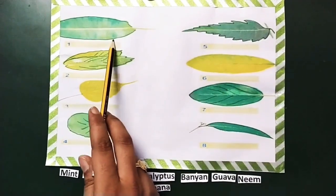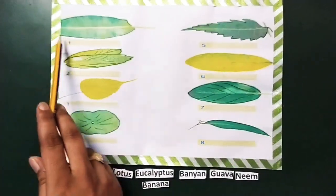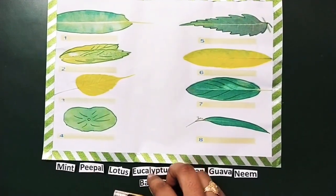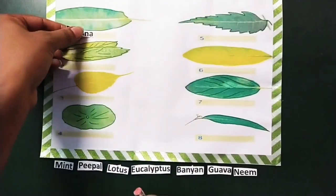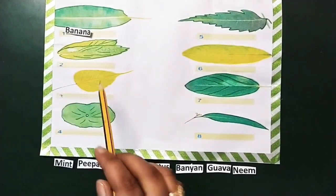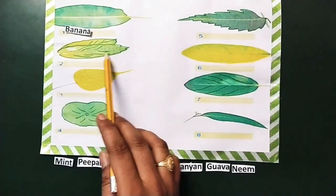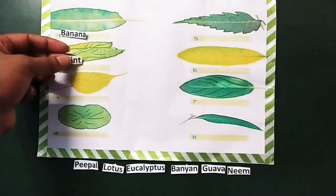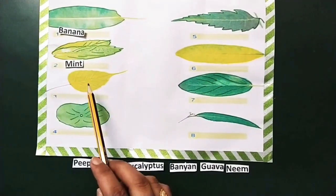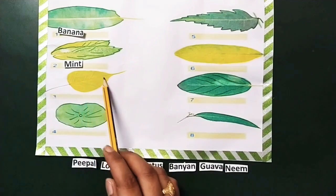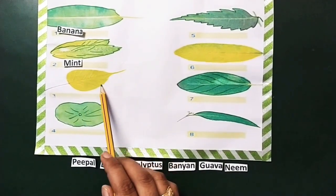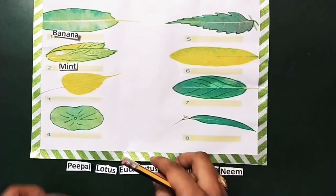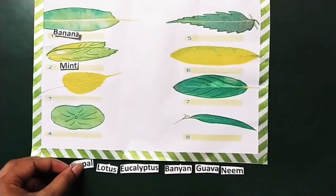In the first picture, we have a big leaf. It is from which tree? Yes, banana. Next, we have which leaf? It is mint. Now here we can see the leaf apex is elongated. Yes, it is the peeple.